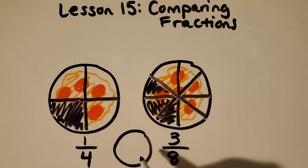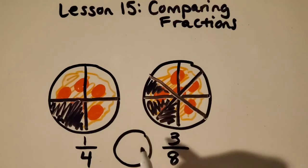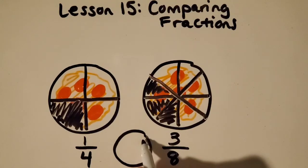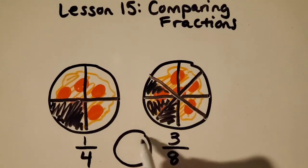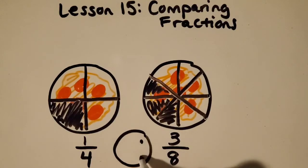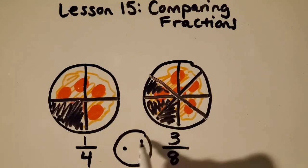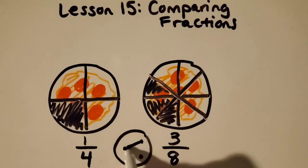I also did a video on comparing whole numbers, and this is my trick that really helps me a lot. So my bigger fraction gets two dots, my smaller fraction gets one dot, and then I just connect the dots.